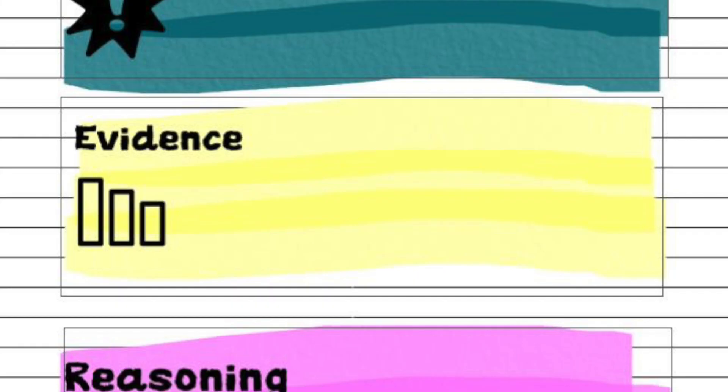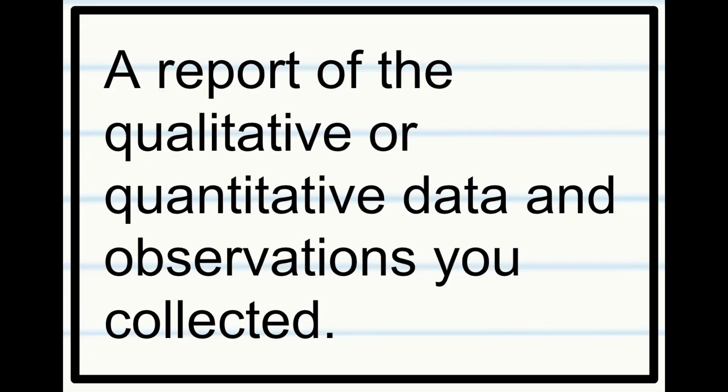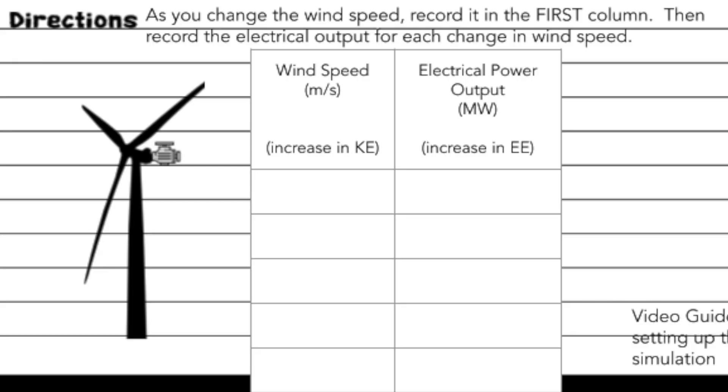Next, we need to provide the evidence that we collected to support our claim. Evidence is a report of the qualitative or quantitative data and observations you collected. In our experiment, we collected quantitative data on how fast the wind speed needed to be in order to generate power output.